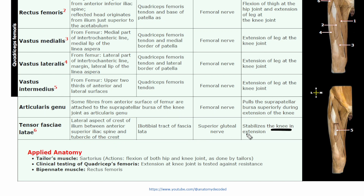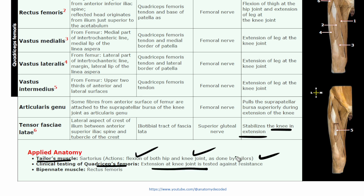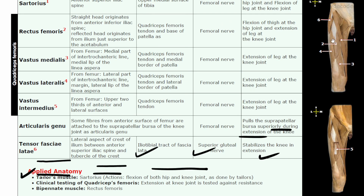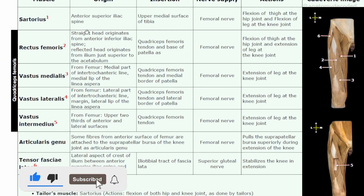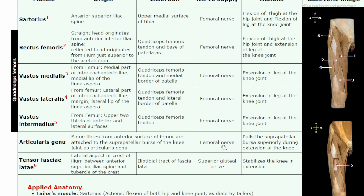Action of tensor fasciae latae is stabilization of the knee in extension. Applied anatomy: sartorius is referred to as the tailor's muscle because tailors cause flexion of the hip and flexion of the knee during tailoring movements. Quadriceps femoris is clinically tested by extension at the knee joint. Rectus femoris is a frequently asked question — it is a bipinnate muscle, with fibers coming from each side to a central tendon.